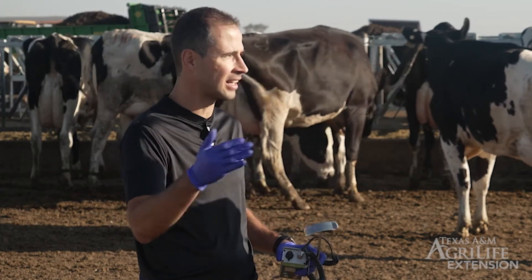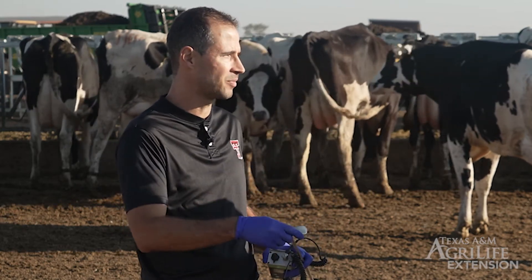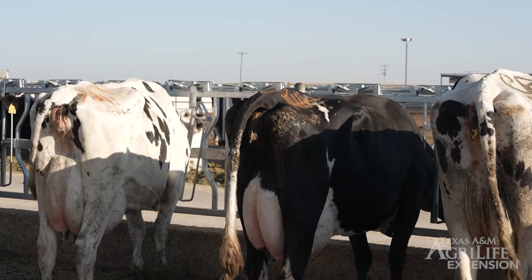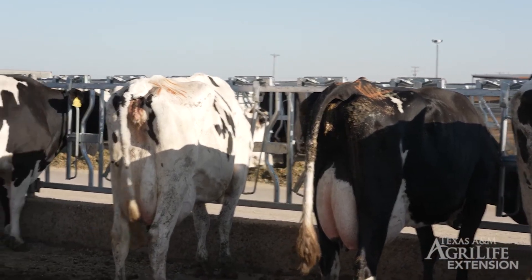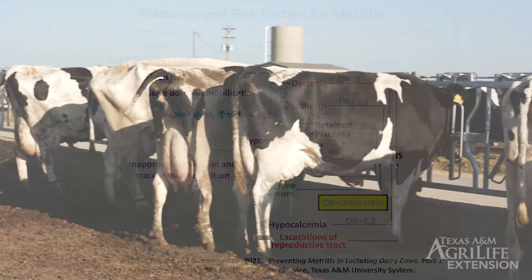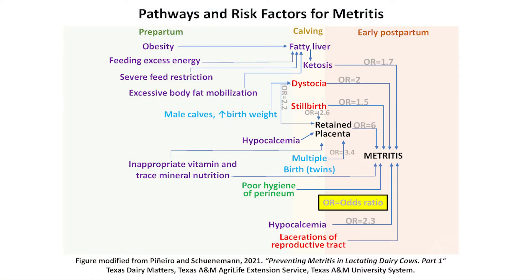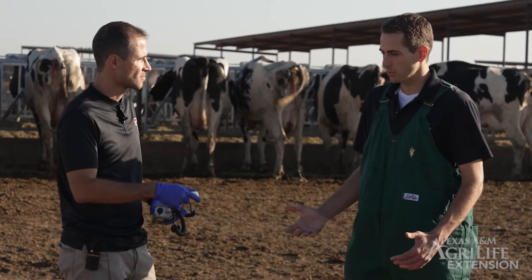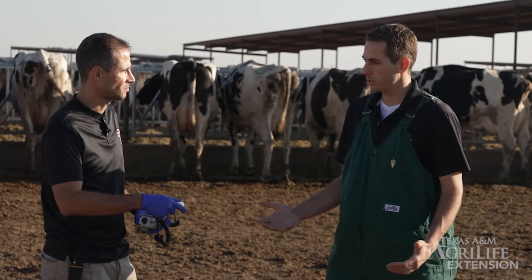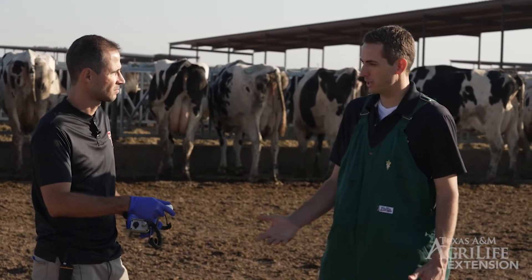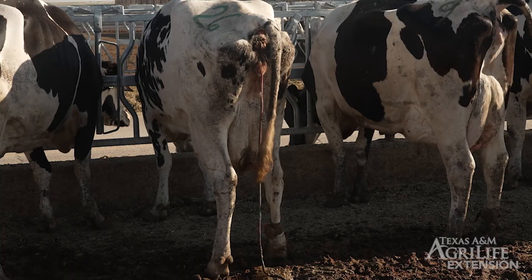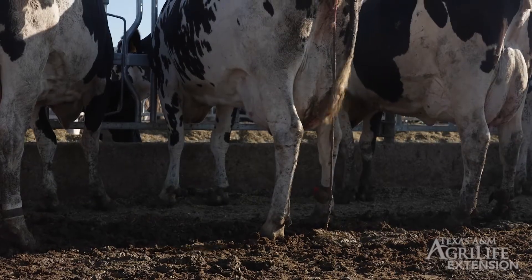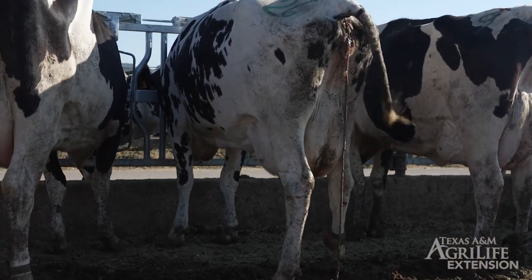Factors that lead to poor immunity in the postpartum period are also risk factors for metritis. We have metabolic imbalances — even minor imbalances — that can lead to impaired immunity, making the cow more susceptible to bacterial infections. One disease associated with metritis, and also with metabolic diseases especially hypocalcemia, is retained placenta, which is a risk factor for metritis.